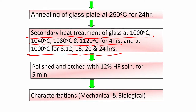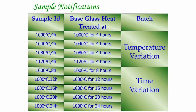To summarize: we have done two types of heat treatment — one varying temperature at a constant 4-hour time, and another at constant temperature with varying time. With increasing heat treatment time, one can expect certain microstructural phases to coarsen. Samples are then polished with 12% HF solution just before microstructural characterization.